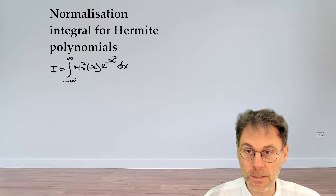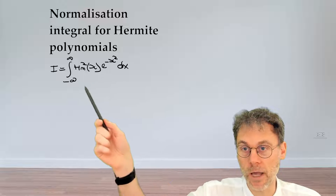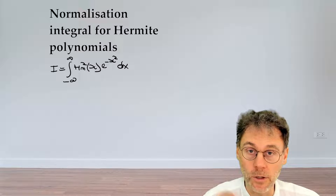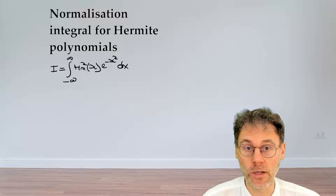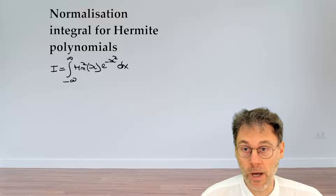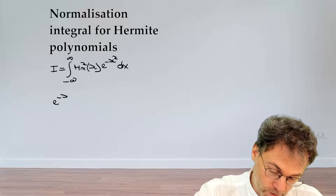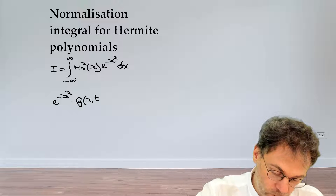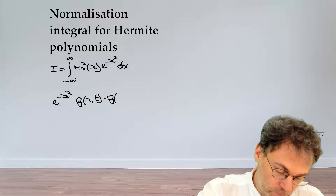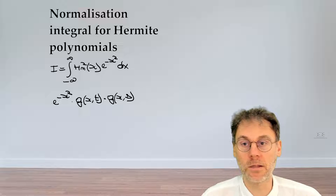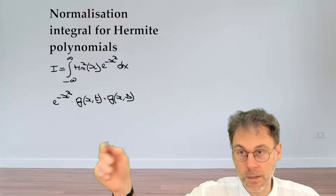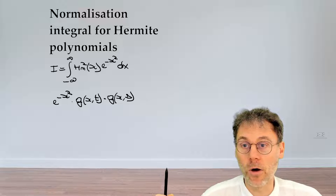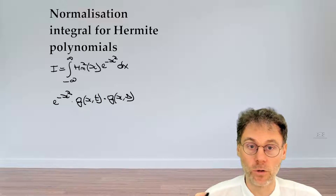Let's look at the integrand: it's basically the product of two Hermite polynomials and an exponential. Since the Hermite polynomials are defined using the generating function, this gives us the idea of looking at the product of the weighting function exponential x squared times the generating function in t, and then also introducing a second copy of the generating function but using s instead of t. This expression smells a little bit like the integral we want, so let's see if we can use it to calculate our normalization integral.